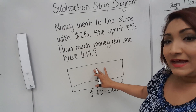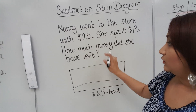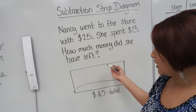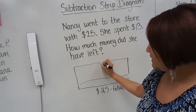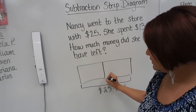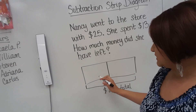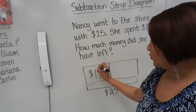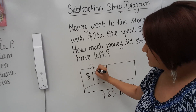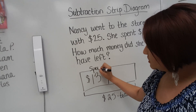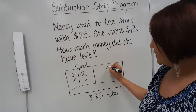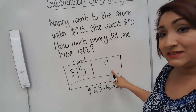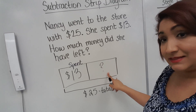Now, inside our rectangle, we know how much she spent — she spent $13. So I'm going to separate the rectangle. This $13 is going to go in one box; this is how much she spent. We are trying to find how much she has left.